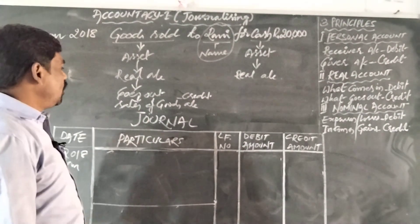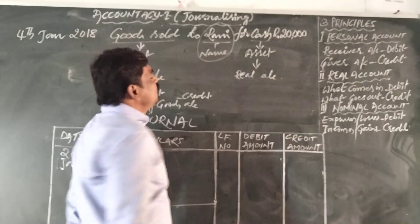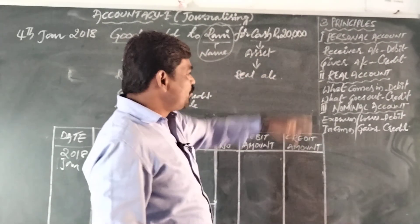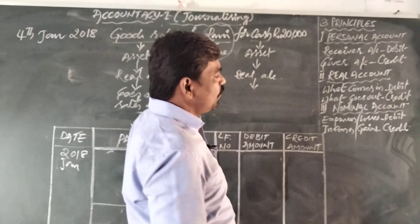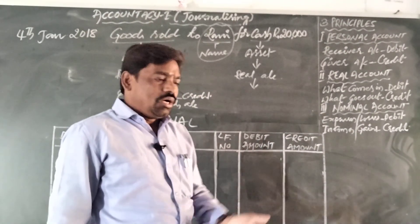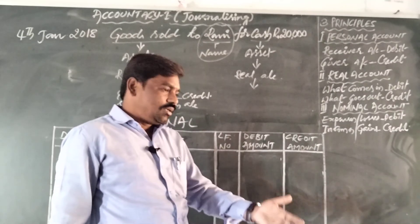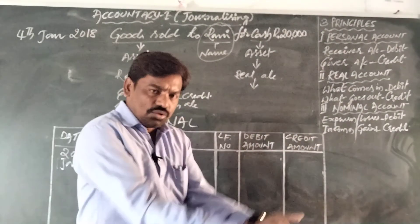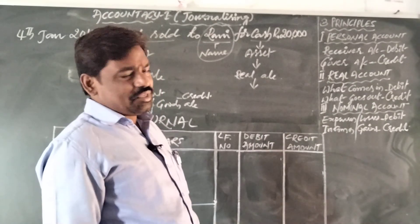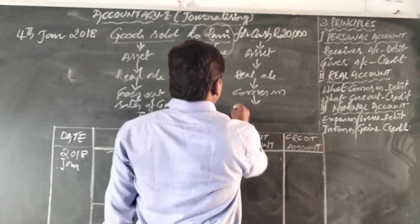Now consider cash. Cash is also an asset, so it comes under the real account. Applying the real account principle: when we sell goods for cash, is cash coming into the business or going out? Cash is coming into the business — we give goods and receive cash. Whatever comes into the business should be debited, so cash account is debited.